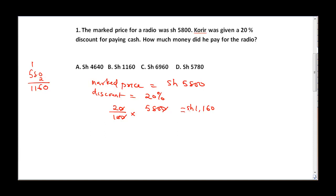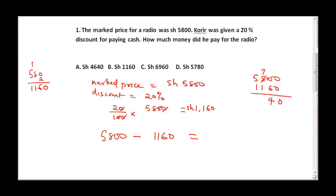Discount is a reduction in price for the customer. To get the actual amount paid, we calculate 5800 minus 1160. Performing the subtraction: borrow where needed — 10 minus 6 is 4, 7 minus 1 is 6, 5 minus 1 is 4. So the final answer is 4640 shillings, and the correct answer is option A.